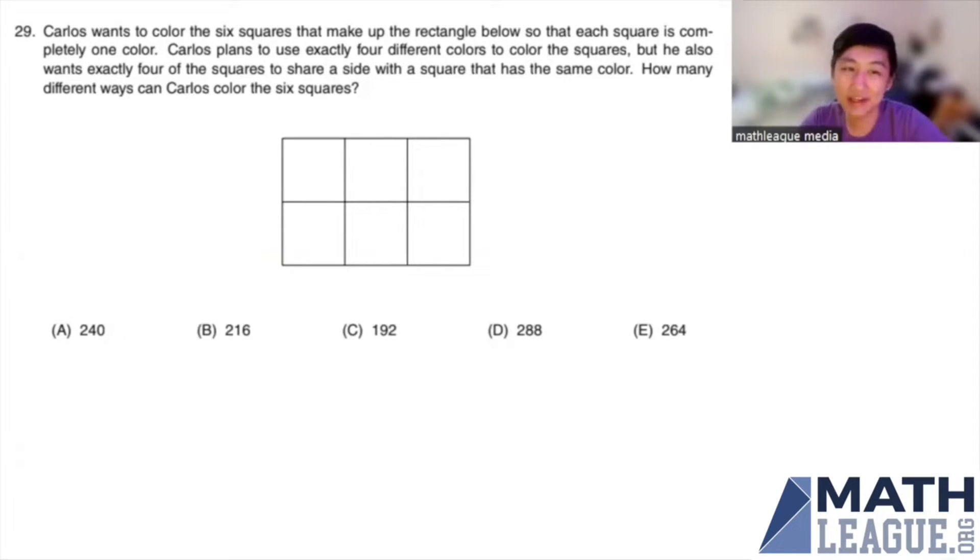How many different ways can Carlos color the six squares? I think the first thing we should do when we approach a question like this is to find a coloring that works and see what kind of properties and rules it has. So let's read the rules. We need to use exactly four different colors, so that means we can't use less than four, we can't use three, we have to use four. And then we want four of the squares to share a side with the square that has the same color. That's like a fancy way of saying we want four of the squares to be neighboring another square with the same color.